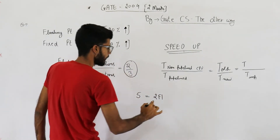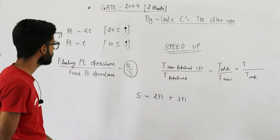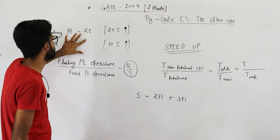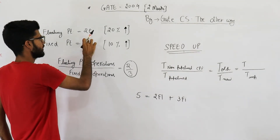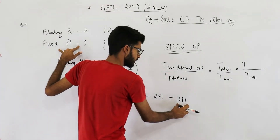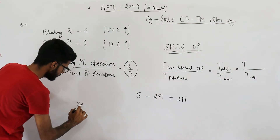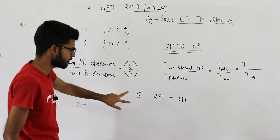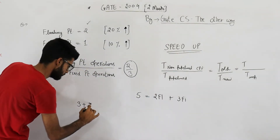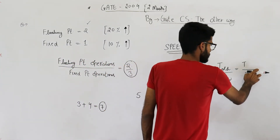So we have two floating point operations and three fixed point operations. Fixed point takes t units of time — let's assume t equals one, so each fixed point operation takes one time unit and each floating point operation takes two time units. The total time taken by fixed point operations is three. Floating point operations are two in number and each requires two time units, so total time for floating point is four. T_old equals three plus four, which is seven.